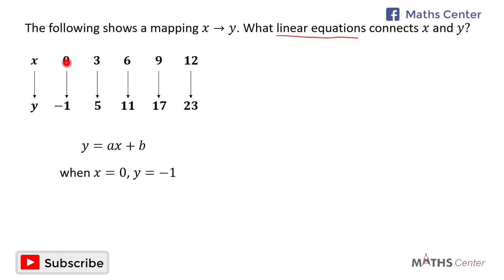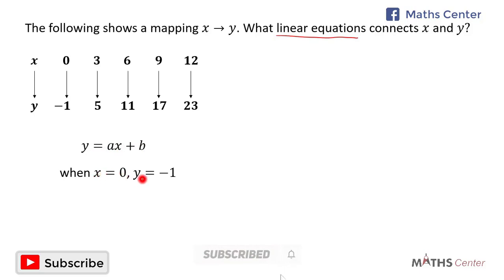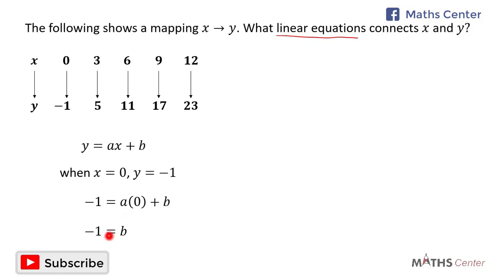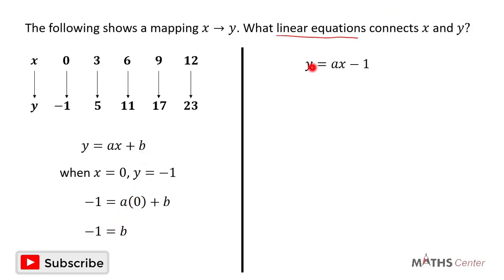From the mapping, when x is equal to 0, y is equal to negative 1. Substituting into y is equal to ax plus b: negative 1 is equal to a times 0 plus b. A times 0 gives 0, so b is equal to negative 1. We have found the constant b. The value of b is negative 1, so our rule is now y is equal to ax minus 1.